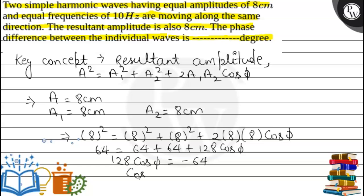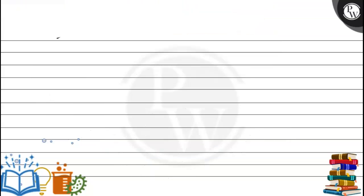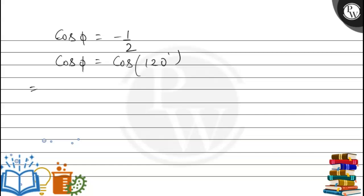Solving for cos(φ): cos(φ) = -1/2. Since cos(120°) = -1/2, comparing both sides gives φ = 120°.